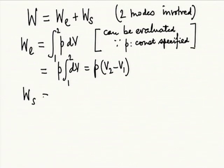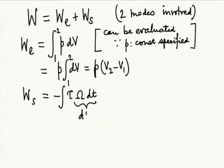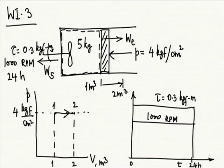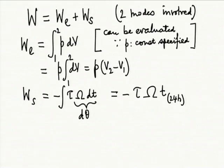The stirrer work W_s is going to be minus the integral over the required time of tau times omega dT. This is an expansion of tau d-theta. Because tau is constant and omega is constant, this will be minus the specified angular velocity times T, representing 24 hours. With this, our specification is over. We have shown our understanding of the situation, the process, and the calculation procedure.